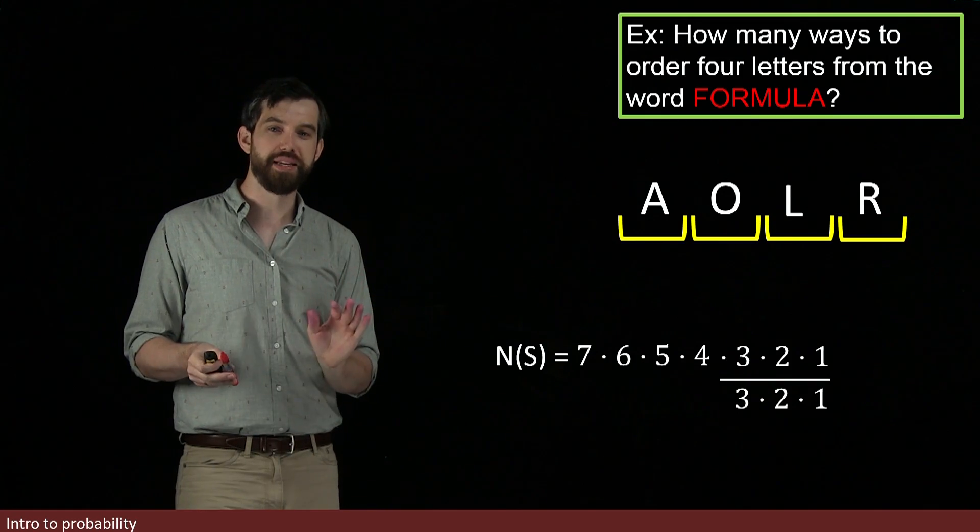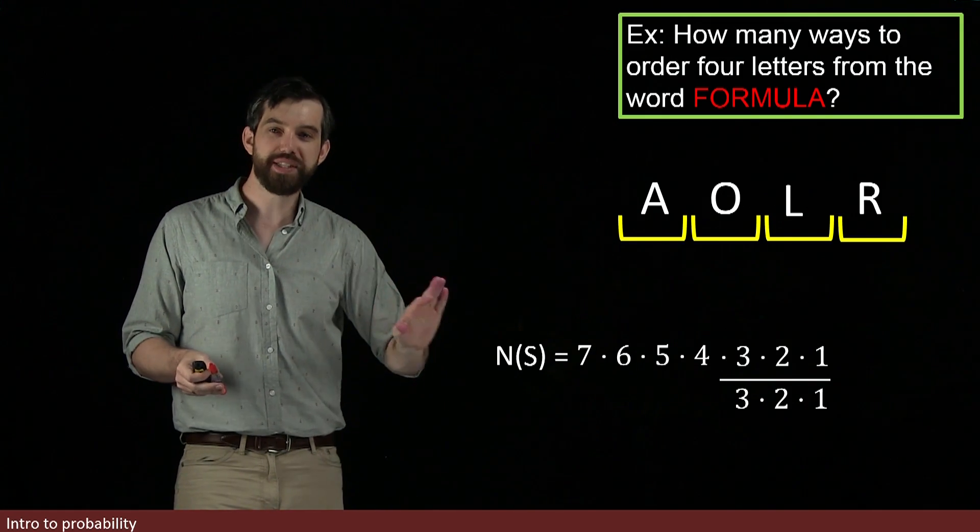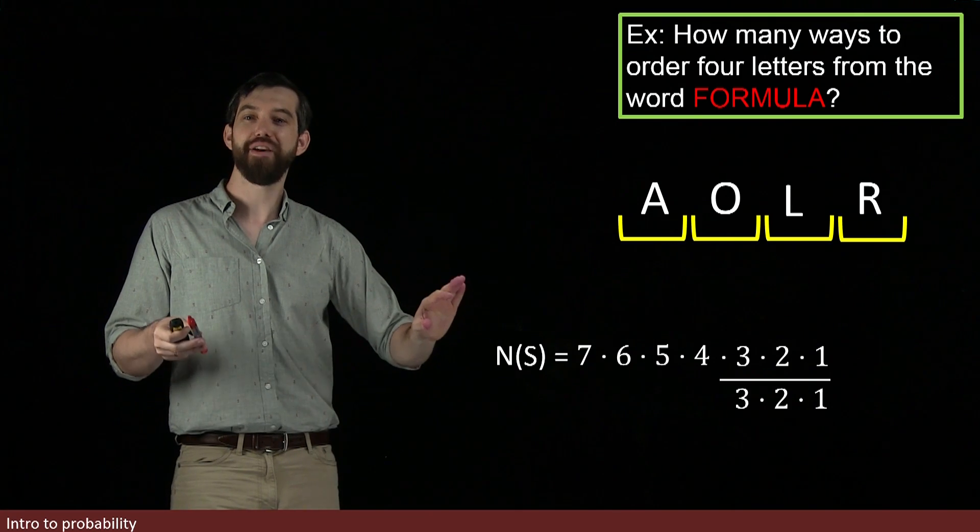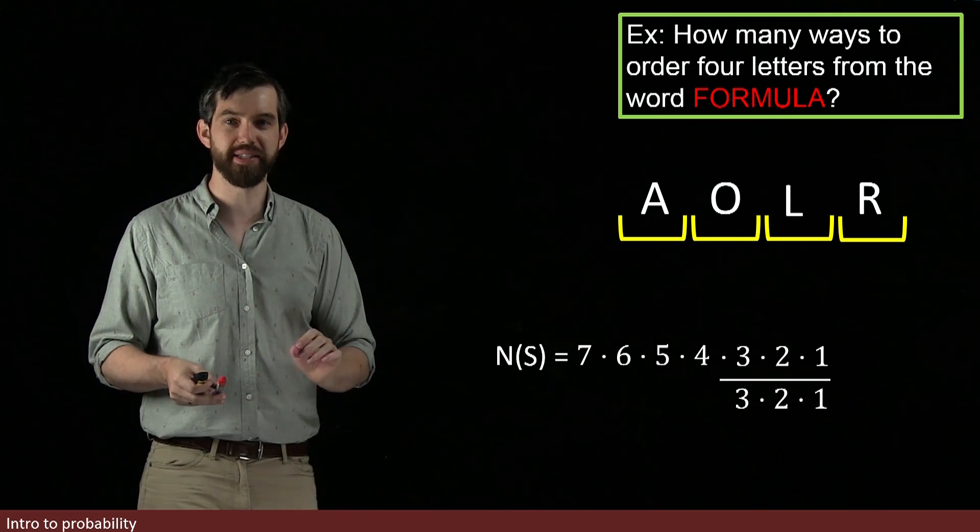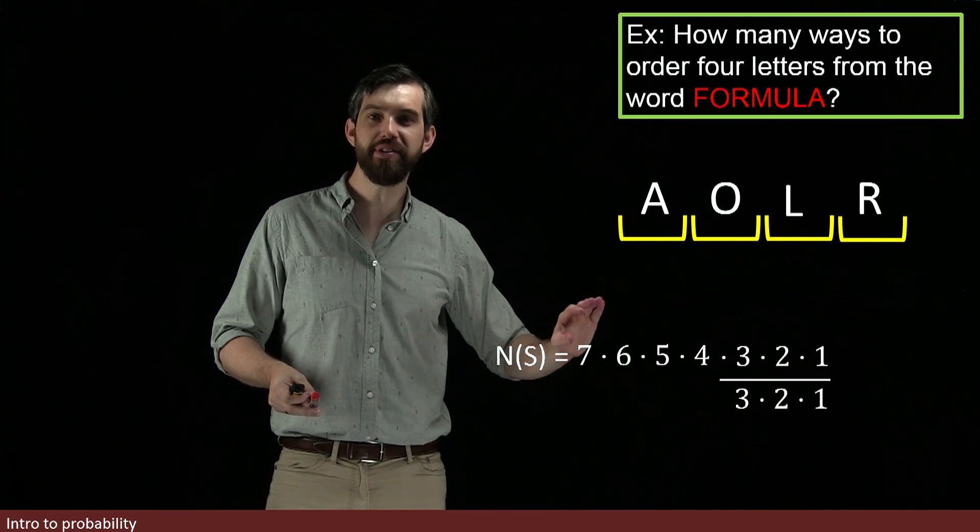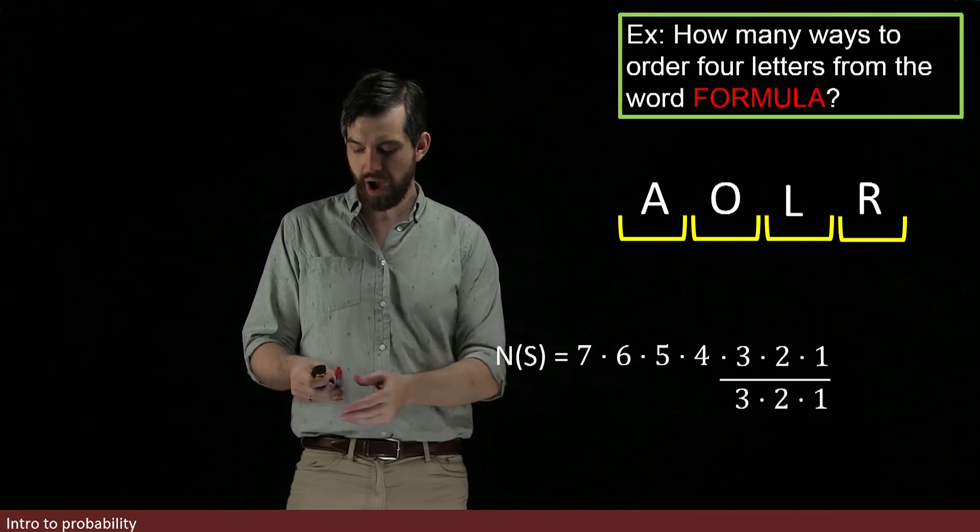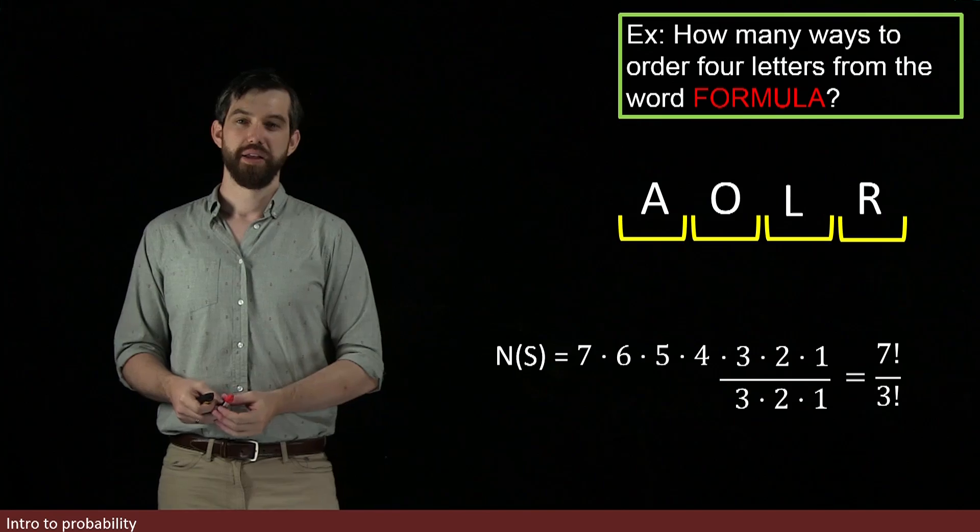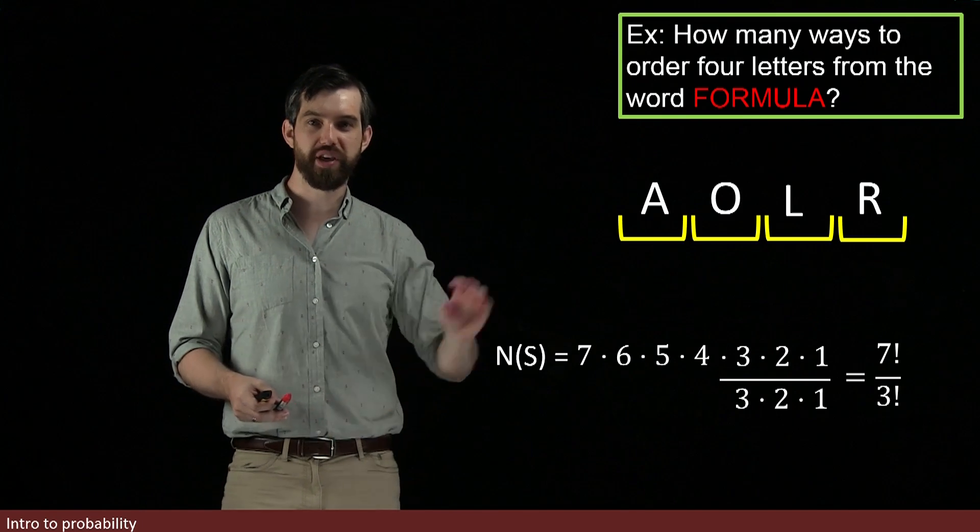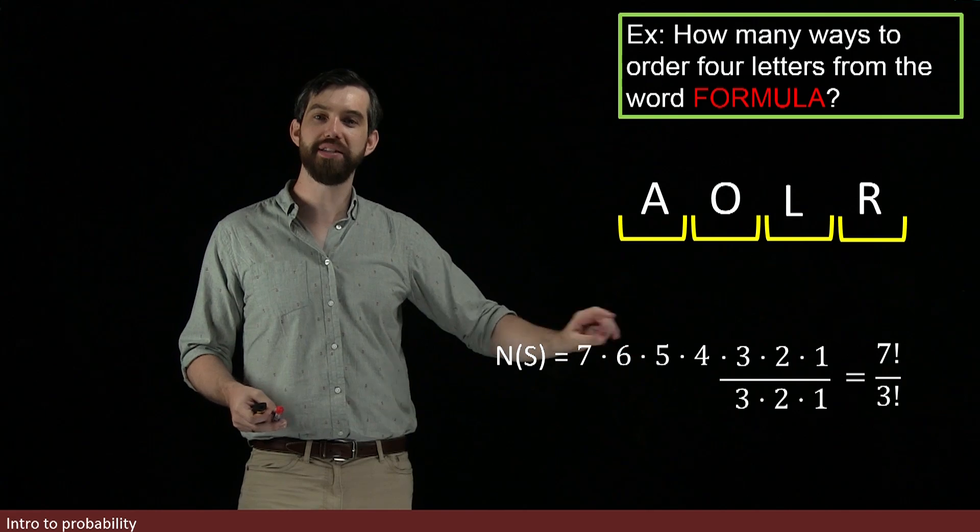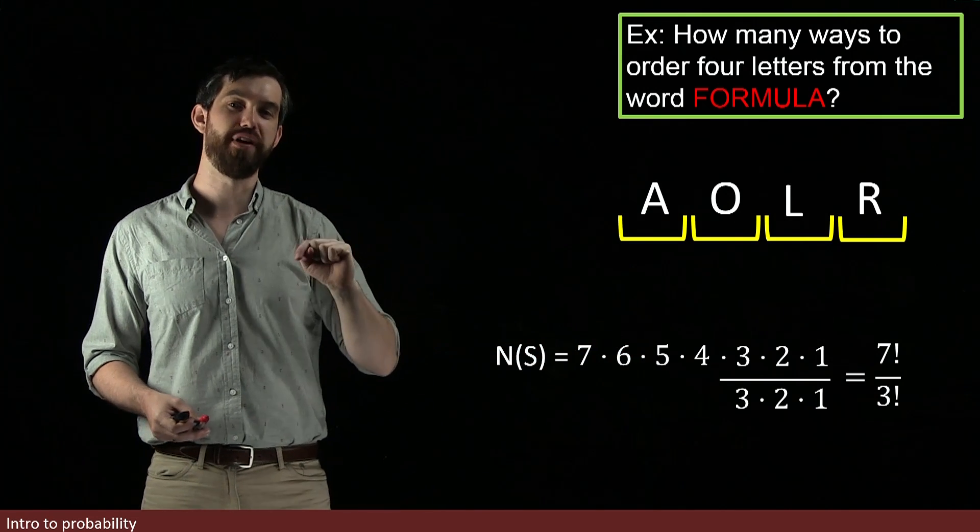But the reason why I do this is that now I can represent this formula for the number in my sample space by factorials. In particular, I can say on the top here, seven, six, five, four, three, two, one, that's seven factorial. And on the bottom, I've got three factorial. So in this case, where the number of letters differed from the number of slots, what I got was the division of two different factorials.